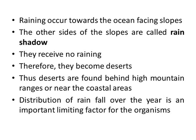The other sides of the slopes are called rain shadow. They receive no rain, therefore they become deserts. The deserts are found behind high mountain ranges or near the coastal areas. Distribution of rainfall over the year is an important limiting factor for the organisms. Ocean facing slope کی دوسری جانب sides کو rain shadow کہا جاتا ہے — اس طرف بارش نہیں ہوتی اور وہ desert بن جاتے ہیں۔